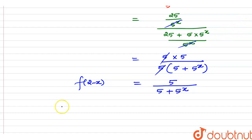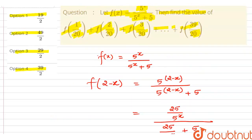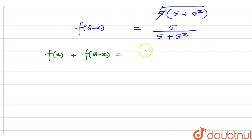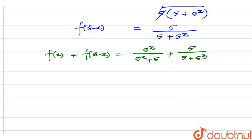If we add f(x) and f(2 − x), we get: 5 raised to power x divided by (5 raised to power x plus 5), plus 5 divided by (5 plus 5 raised to power x). Adding these two fractions gives us 1. So we have established that f(x) + f(2 − x) = 1.